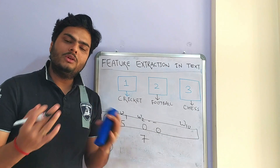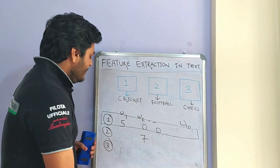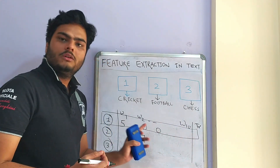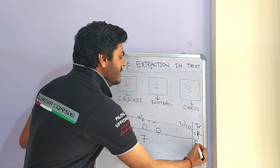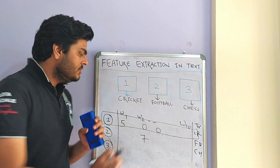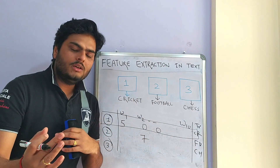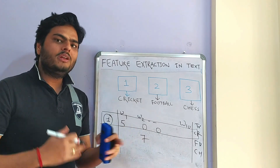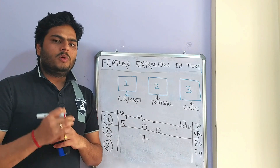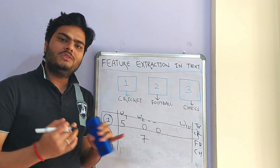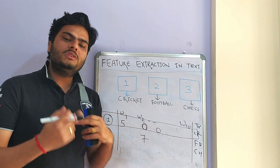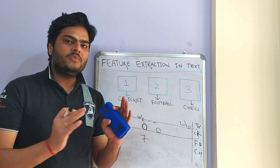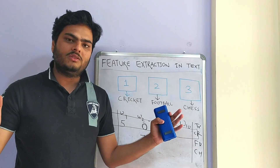Now how can this be used in a machine learning algorithm? We are solving a classification problem, so we have a target variable — cricket, football, and chess for each document. Now you have the numbers and a target variable, so you can fit a machine learning algorithm on it. But there are problems with this basic approach. Problem number one: this matrix will have a lot of zero values, because many words appear in only one document. Those words still enter the unique vocabulary but are zero in other documents, making the vector really big in size and hence difficult to process.